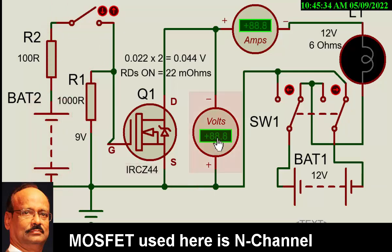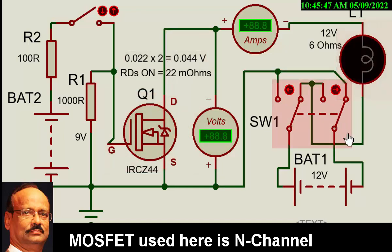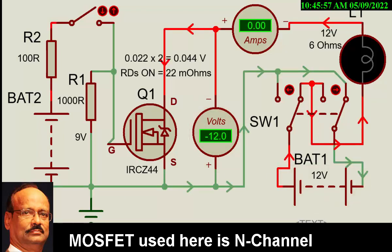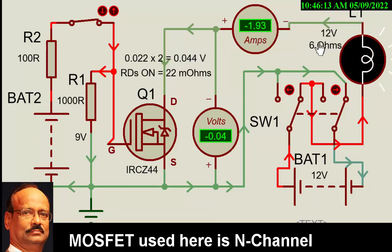In this traditional case, the positive terminal goes through the lamp to the drain and then to the source via the negative point — this is the conventional way of using the MOSFET. Once we operate this, we notice there is no current flowing because we have not triggered the gate. Once I trigger the gate, the current is approximately 2 amperes, because 6 ohms resistance with 12 volts gives 12 divided by 6, about 2 amperes. The current is flowing in this direction.